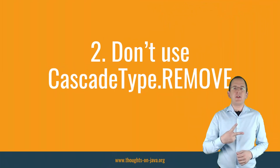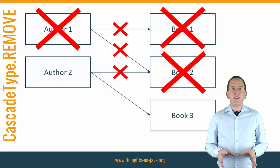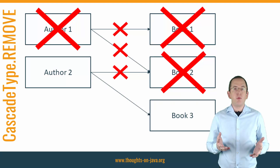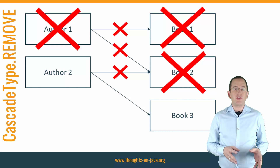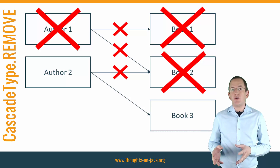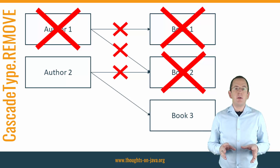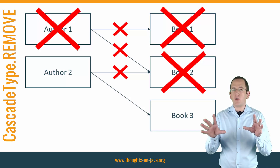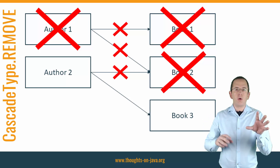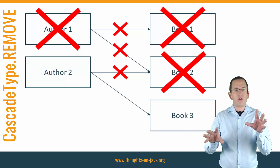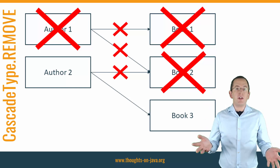Best practice number 2: Don't use CascadeType Remove. Using CascadeType Remove on a many-to-many association removes more entities than you probably expect. Hibernate removes all associated entities, even if they are associated with other entities. Let's say you model a many-to-many association using CascadeType Remove between your Author and Book entity. If you then remove an author who wrote a book on her own and co-authored a second book, Hibernate removes both books when you delete the author.